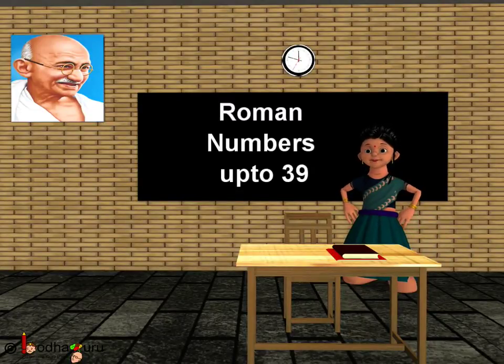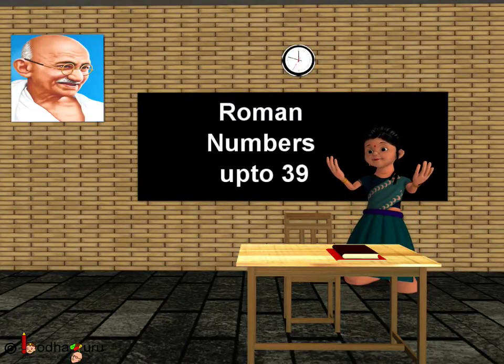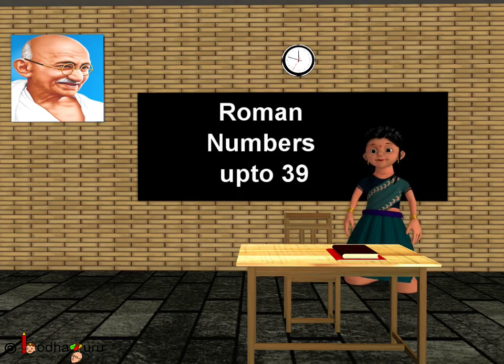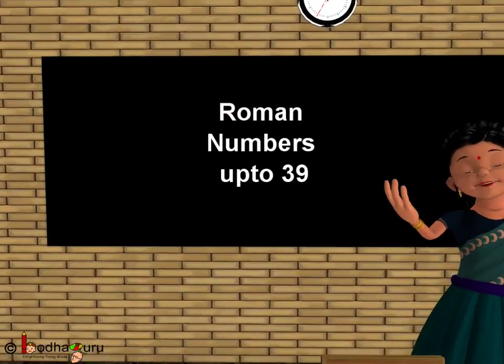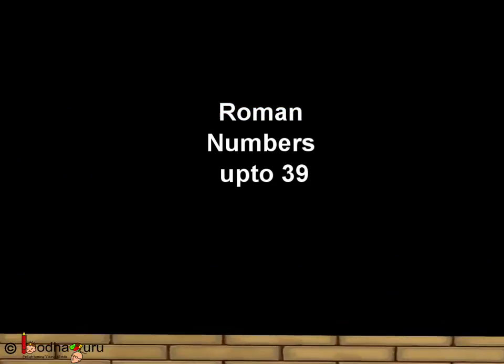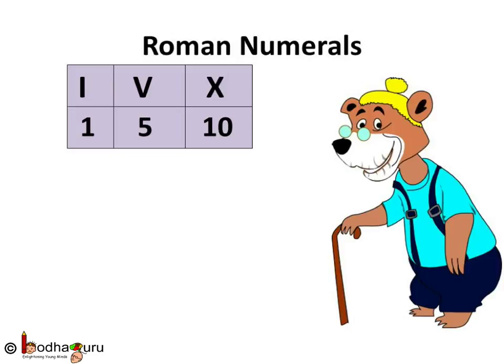Good morning, children. Now you know how to write numbers 1 to 10 using Roman numerals. Let us learn further. A quick recap. In Roman numerals, 1 is the letter I, 5 is capital V, and 10 is capital X.